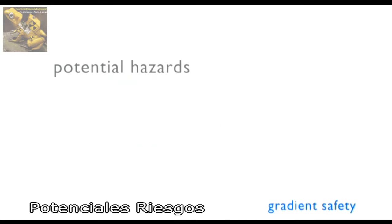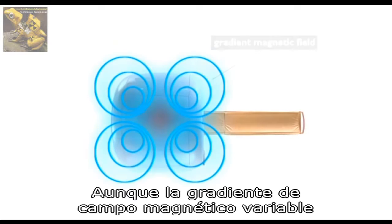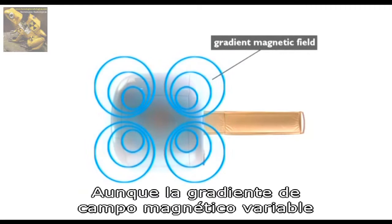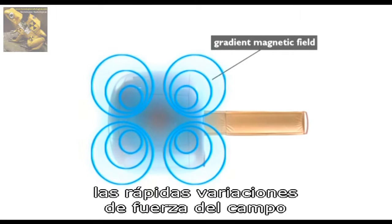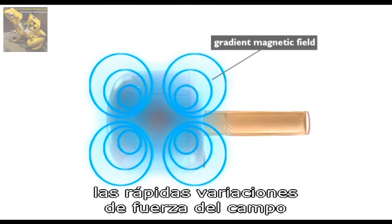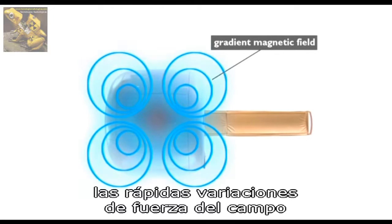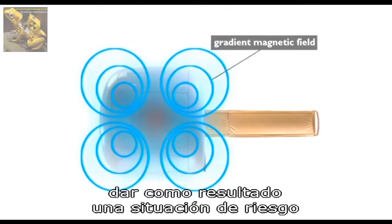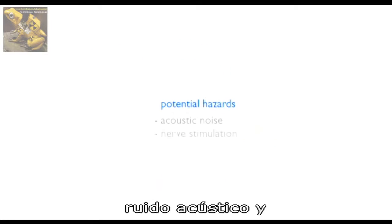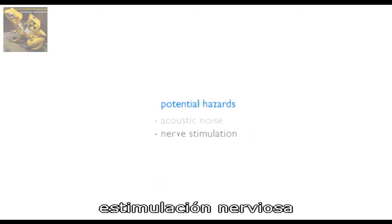Although the switched gradient magnetic field is much weaker than the static magnetic field, the rapid changes in gradient field strength present two different effects that may result in a hazardous situation. These are acoustic noise and nerve stimulation.